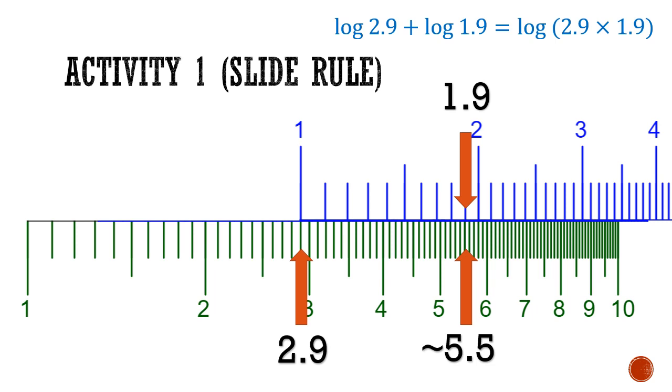So how this works is because of the product law in logarithms. Log 2.9 plus log 1.9 gives us log of 2.9 times 1.9. So since we have arranged the numbers on a log scale, just by adding the distances of the numbers together gives us the product of two numbers. So check it out in the applet below.